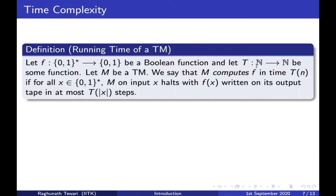Now, what do we mean by the running time of a Turing machine? Suppose we have a boolean function f — a function which takes a string as input and outputs either zero or one. Given a boolean function f, a function t from natural numbers to natural numbers, and a deterministic Turing machine M, we say that M computes f in time t(n) if for all x in {0,1}*, M on input x halts with f(x) written on its output tape in at most t(|x|) steps.